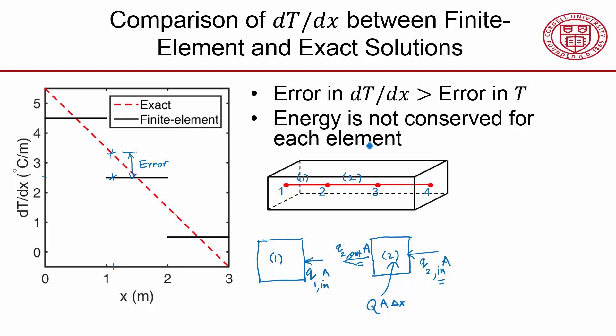It's also not conserved for each infinitesimal element, because if that were the case, the differential equation would be satisfied exactly, and we saw that our finite element solution satisfies the differential equation poorly. But it turns out that energy is conserved in aggregate. We'll take a look at that next.